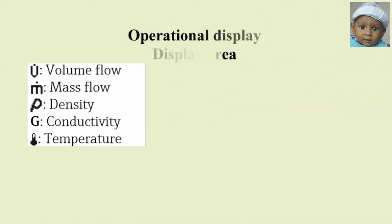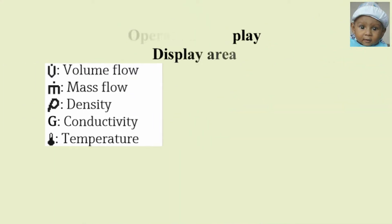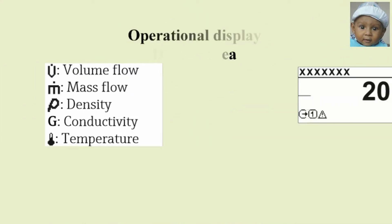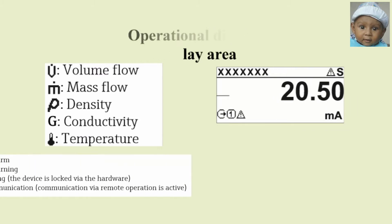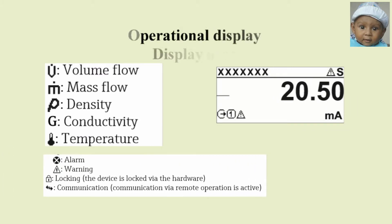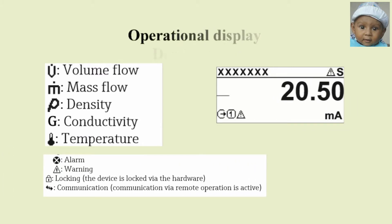On the flow meter display we can also see the symbols for Volume Flow, Mass Flow, Density, Conductivity, and Temperature.